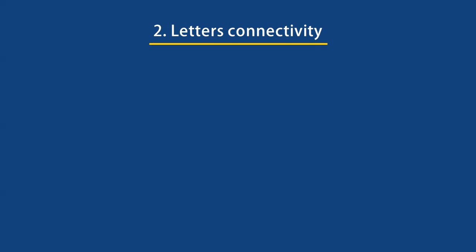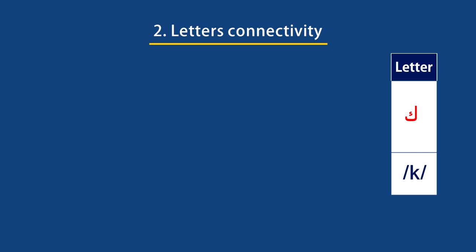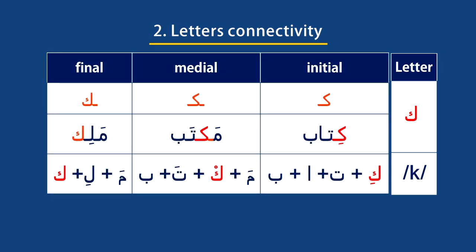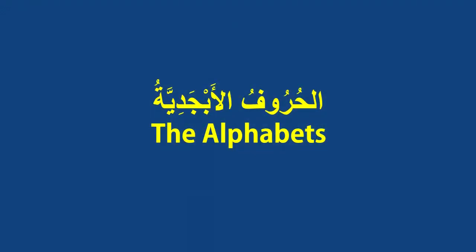When letters are connected, their shape changes, so if you are new to Arabic you might have difficulty recognizing whether it is the same letter or another. For example, the letter Kaf has the sound of K in English. Its shape in the initial and medial positions is almost the same, but very different from the final position. Don't be confused — in coming lessons I will show the positions of each letter so you can identify them easily.